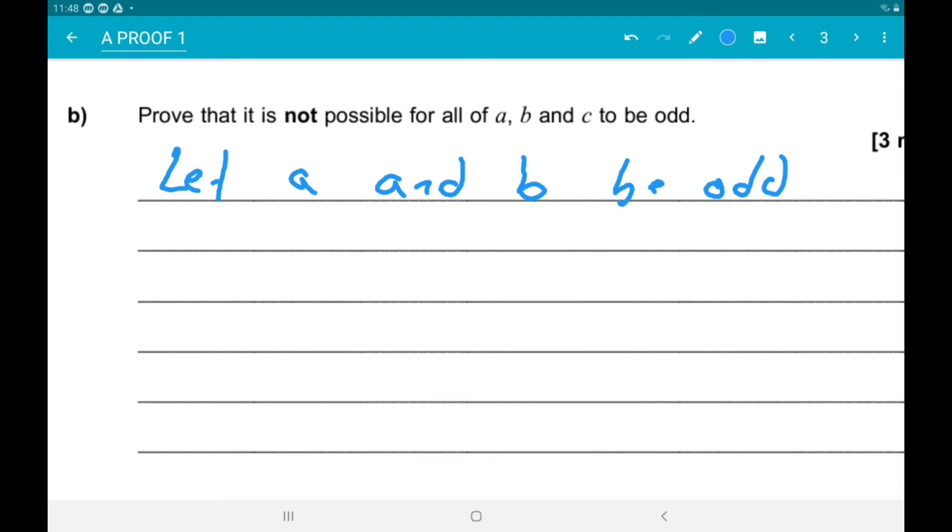So, what we're going to do is prove algebraically that this would make c squared even and then c even. So, let's say that a is 2x plus 1. And b can be 2y plus 1.